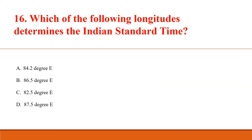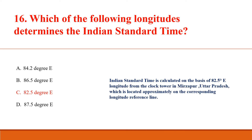Which of the following longitudes determines the Indian Standard Time? Answer C: 82.5° E. Indian Standard Time is calculated on the basis of 82.5° E longitude from the clock tower in Mirzapur, Uttar Pradesh, which is located approximately on the corresponding longitude reference line.